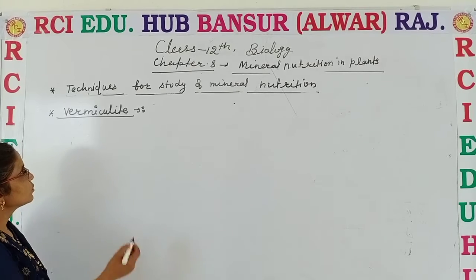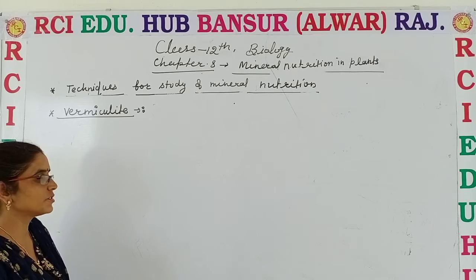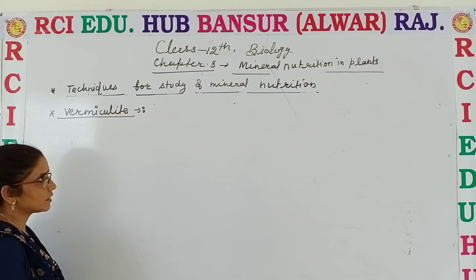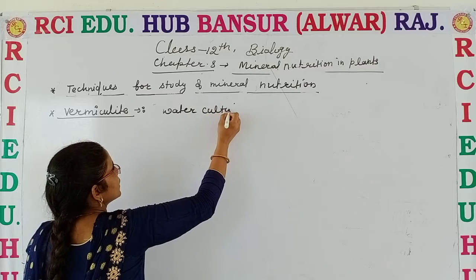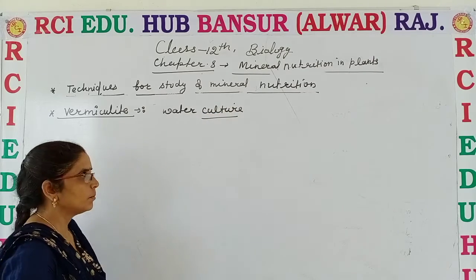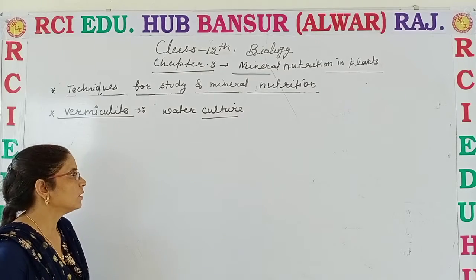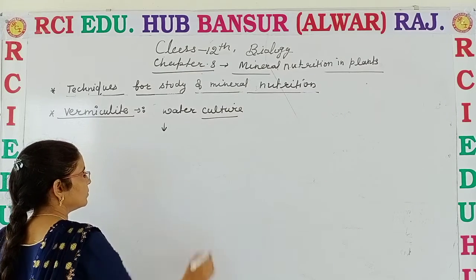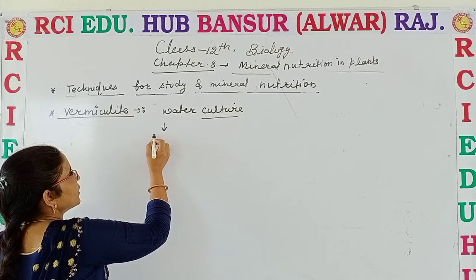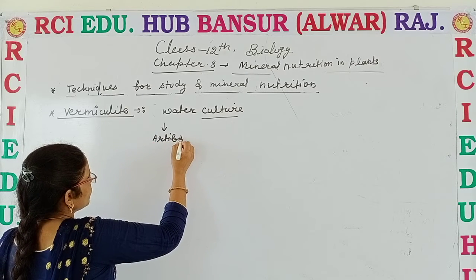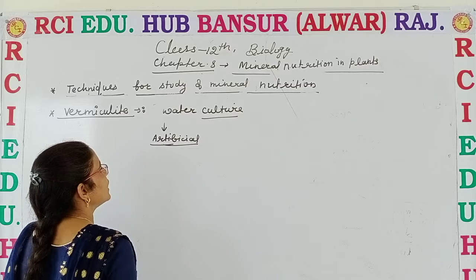The second technique for study of mineral nutrition is Sand Culture and the third is Water Culture. Now the next one is Vermiculite. Before this we discussed hydroponics or water culture, but water culture had many problems — for example, fixation of the root is not possible in water culture. To overcome that problem, we can use plastic, quartz, or vermiculite, which is known as artificial soil, and it is much better for the healthy and good growth of plants.